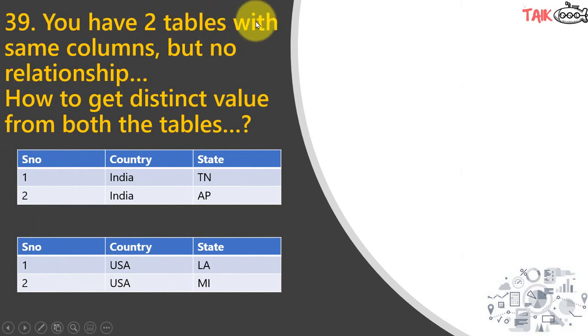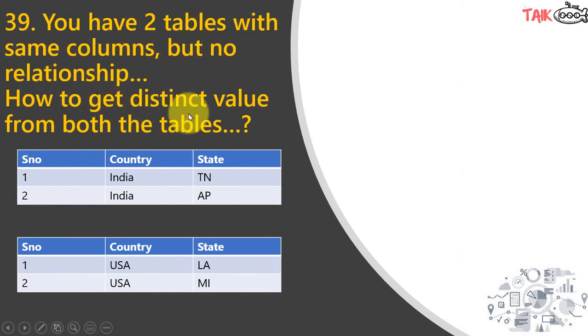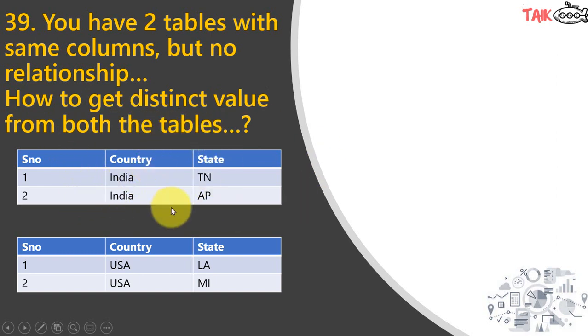If you have two tables with the same columns but no relationship, how do you get distinct values from both tables? The table structure has columns: serial number, country, and state — present in both tables.